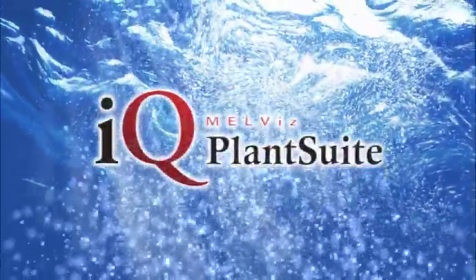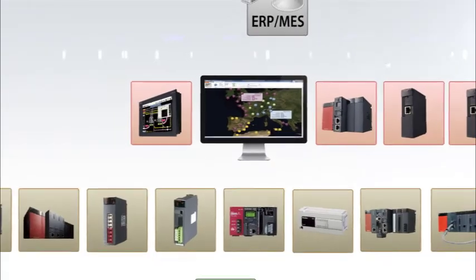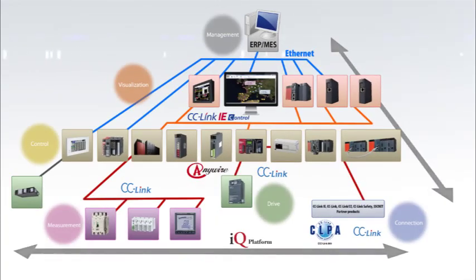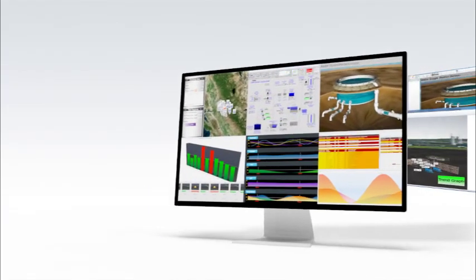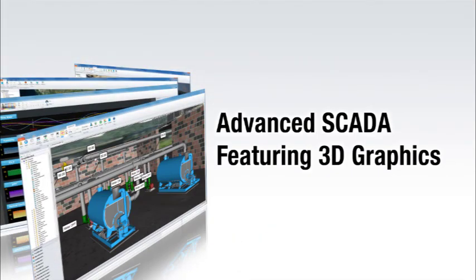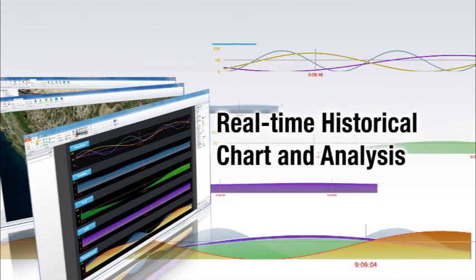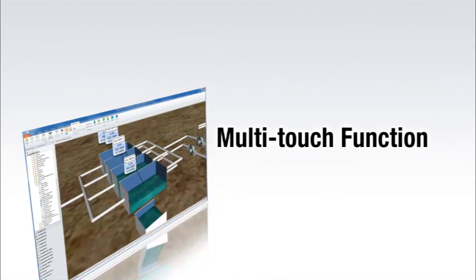iQ Plant Suite is revolutionizing the social infrastructure. iQ Plant Suite combines Mitsubishi Electric's highly reliable automated systems, high-speed network systems, and the advanced SCADA MCWORK64. To reduce costs and improve productivity, operational supervisors must optimize cost performance and take responsibility to ensure global competitiveness. iQ Plant Suite's SCADA component MCWORK64 contains all necessary functions including advanced 3D graphics, real-time historical data analysis, mapping tools to access assets wherever they are located, and intuitive multi-touch operation which reduces errors and training time.